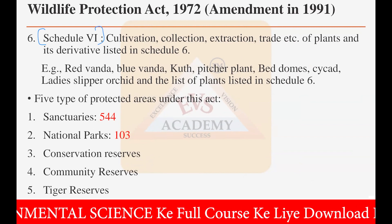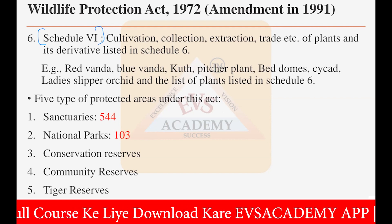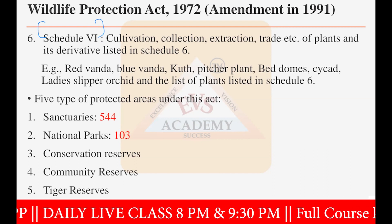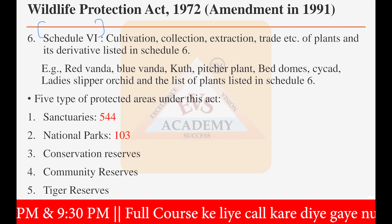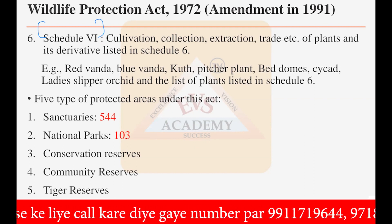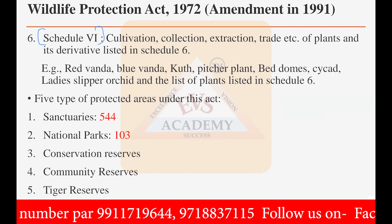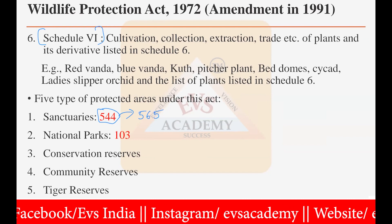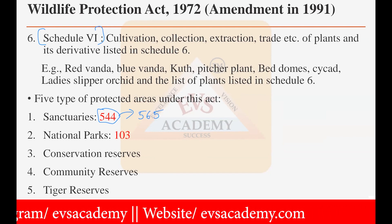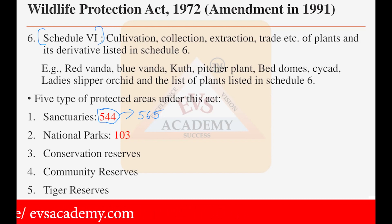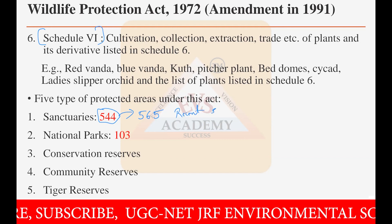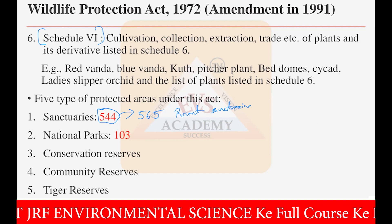Under the Wildlife Protection Act 1972, there are five types of conservation areas: sanctuaries, national parks, conservation reserves, community reserves, and tiger reserves. The number of sanctuaries in India has increased to 565. You should find out the list of recent sanctuaries, especially the two or three most recently formed, as questions in examinations are likely to come from recent additions.